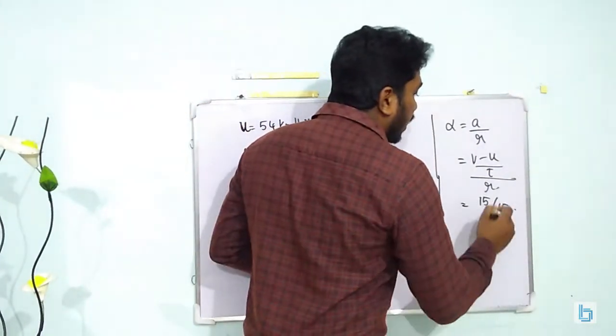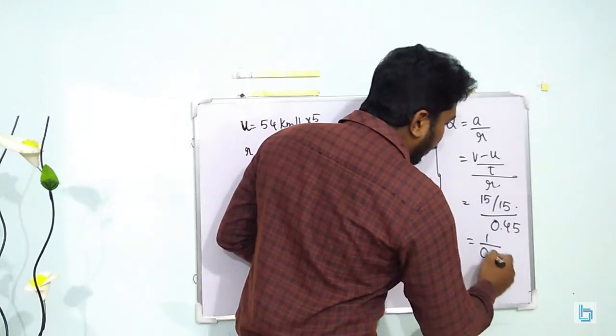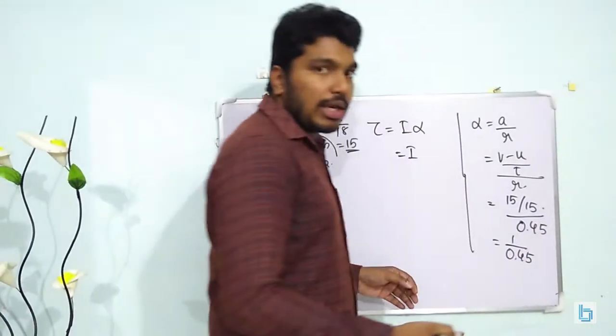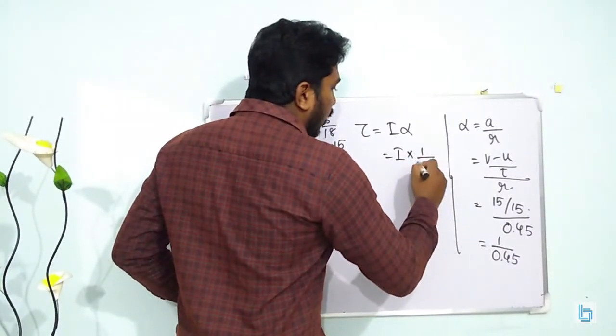Substituting it over here we get 15 by 15 by R, that is 0.45. So it will be 1 by 0.45. Okay? Let's substitute it over here. Alpha is 1 by 0.45.